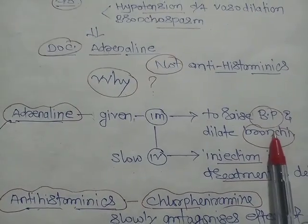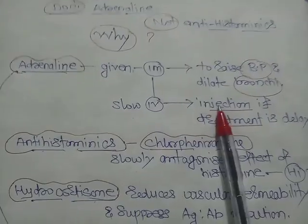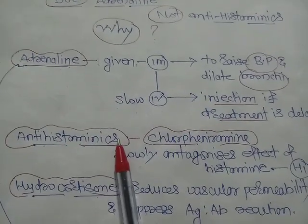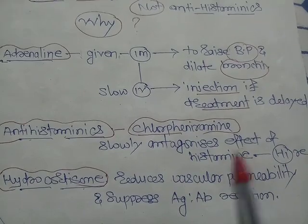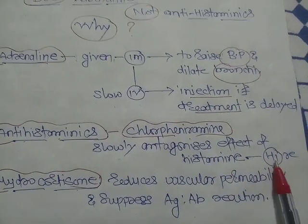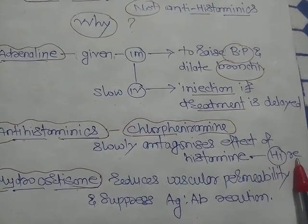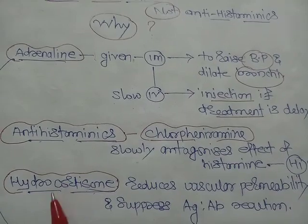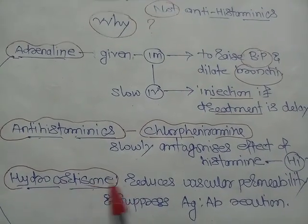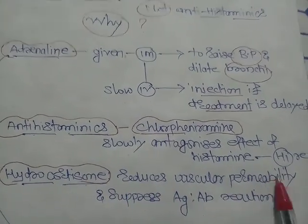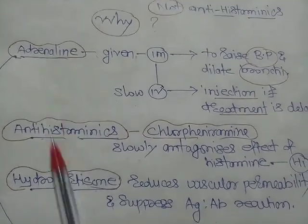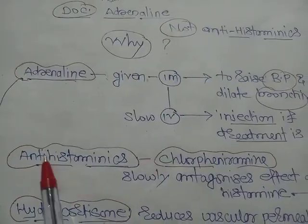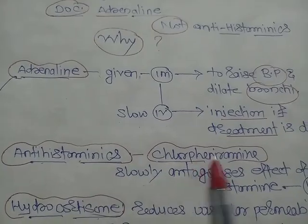You can also give antihistaminics like chlorpheniramine, which slowly antagonizes the effect of histamine by acting on H1 receptors. You can also give hydrocortisone, which reduces vascular permeability and suppresses the antigen-antibody reaction. These three drugs are given, but antihistaminics are still not the drug of choice.